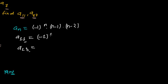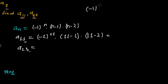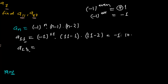For a11: replace n by 11, giving (-1)^11 × (11-1) × (11-2). Since the power 11 is odd, (-1)^11 = -1. So it's -1 × 10 × 9. That is -90. So a11 = -90.